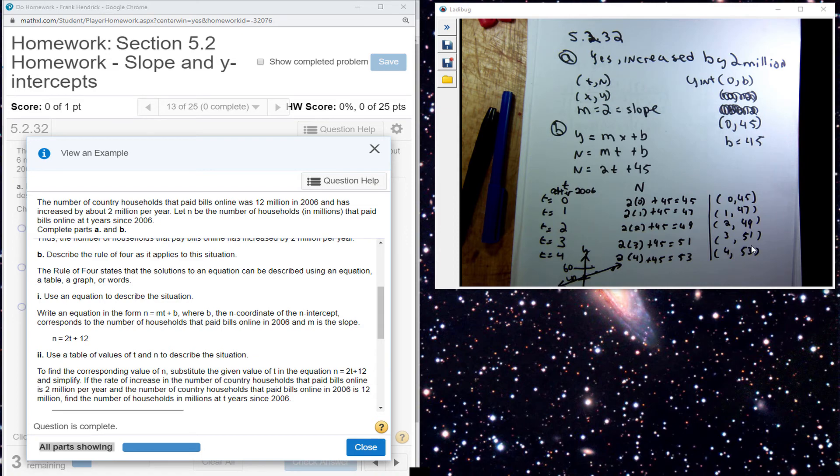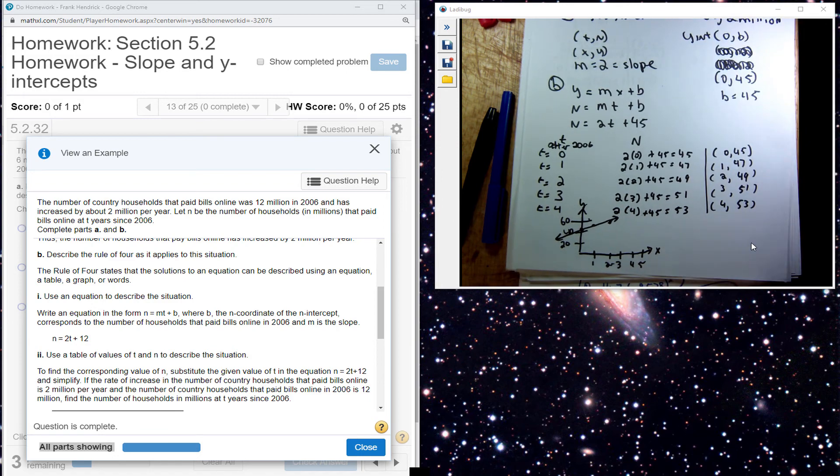I can graph the ordered pairs. So when T is 0, Y is 45. When T is 1, Y is 47.